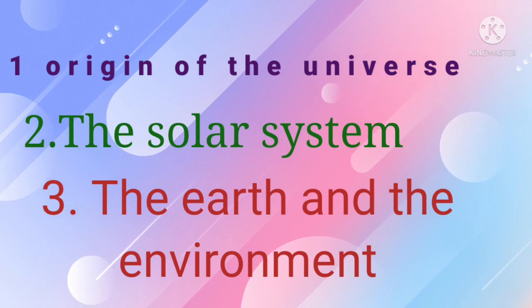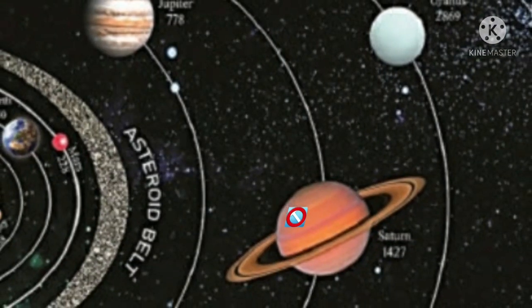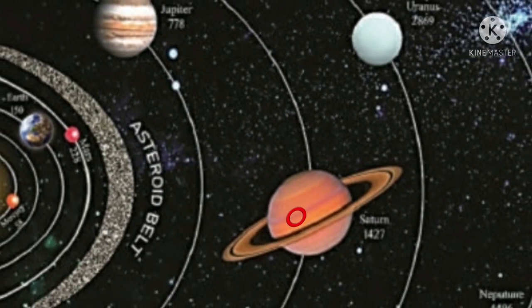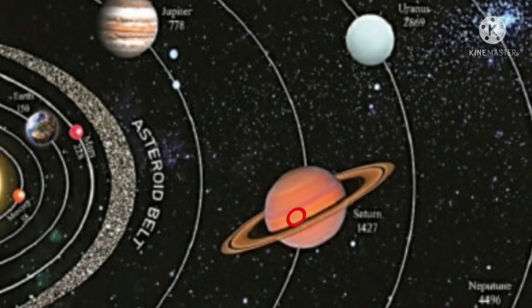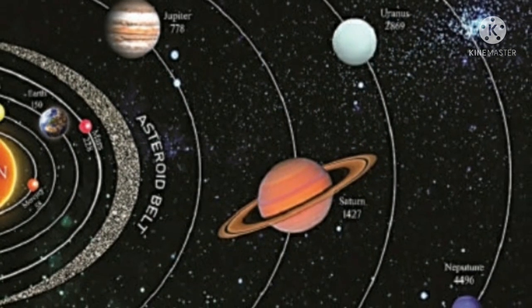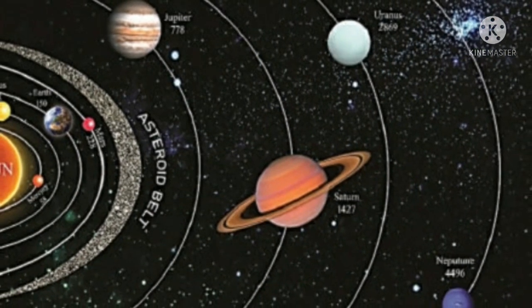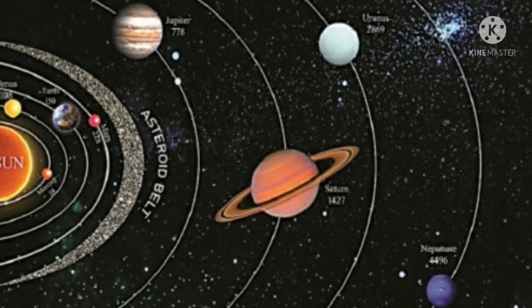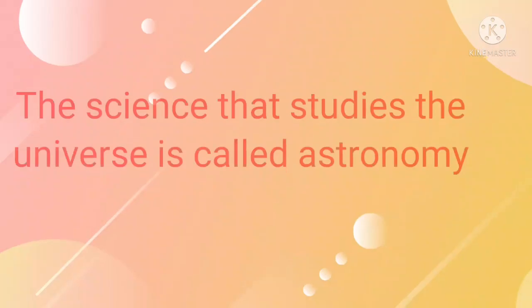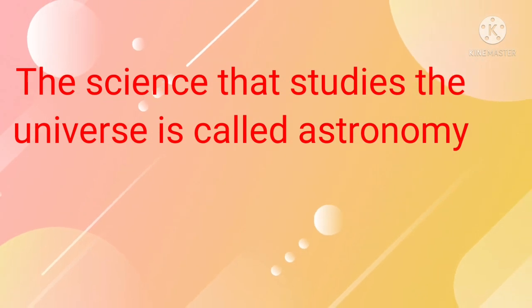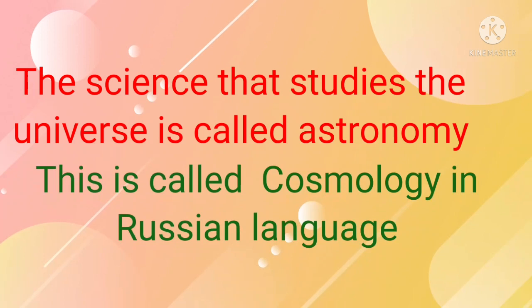Let's learn about the universe. The universe is a vast space that contains many unimaginable elements. It includes the Sun, planets, the Milky Way galaxy, and all other galaxies. Nobody knows how big the universe is — the range of the universe is infinite. The science that studies the universe is called astronomy.